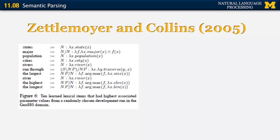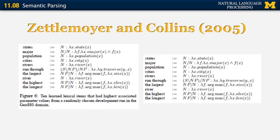The derivations for 'Utah borders Idaho' and 'What states border Texas?' illustrate how lambda-format output is produced using CCG derivations. Some of the learned grammar items and the full grammar are shown. This concludes the section on semantic parsing.